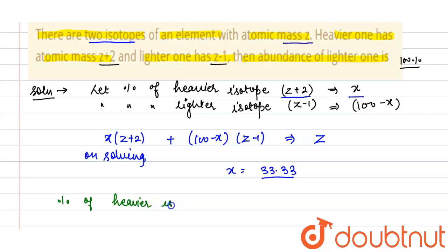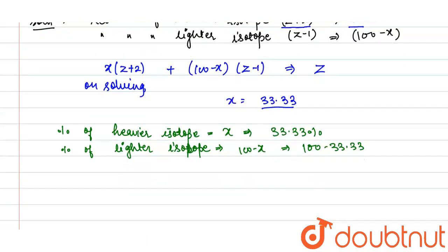of the lighter isotope. It will be 100-x, so it will come out to be 100-33.33 = 67.66%. So the abundance of the lighter isotope, which we have to calculate in this question, is 67.66%. Thank